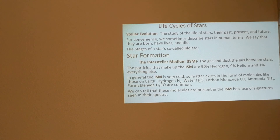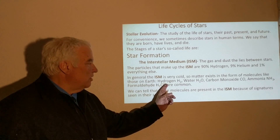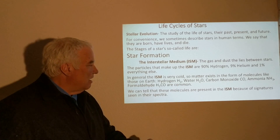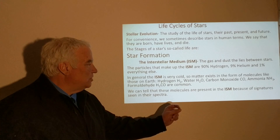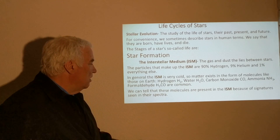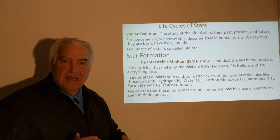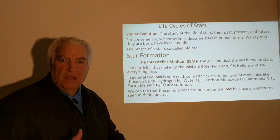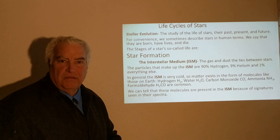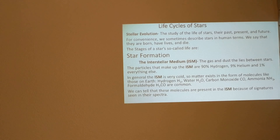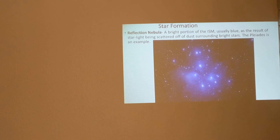The interstellar medium is about 90% hydrogen, 9% helium, and 1% everything else. We have to remember that the ISM is very cold. We have molecules like H2 — two hydrogen atoms making a hydrogen molecule — as well as water, carbon monoxide, ammonia, and formaldehyde. By looking at the spectrum of gas in the ISM, we can identify what it is made of.